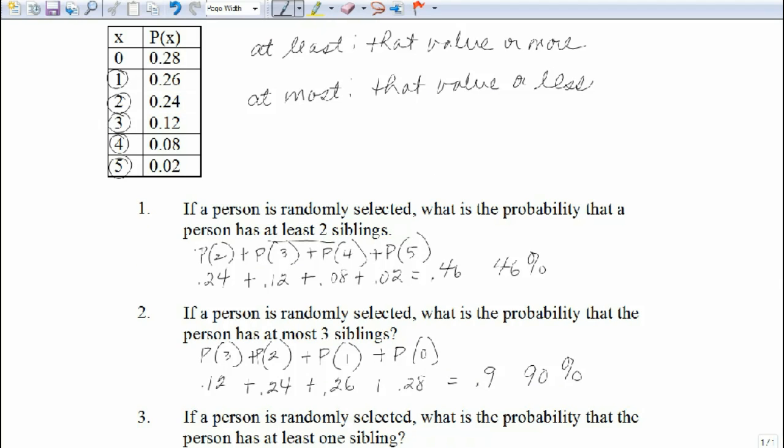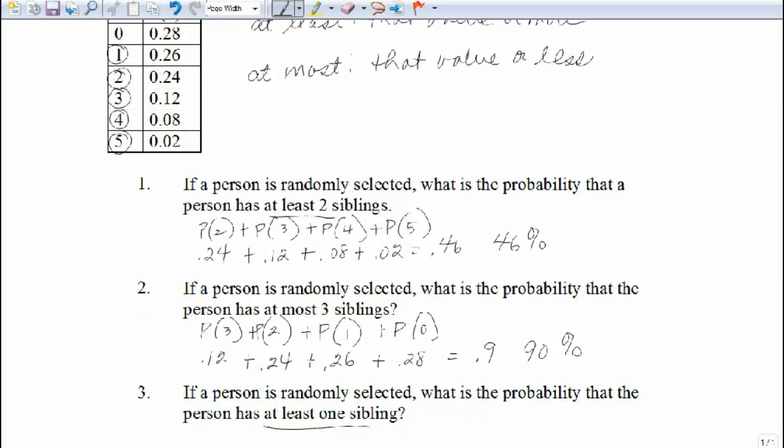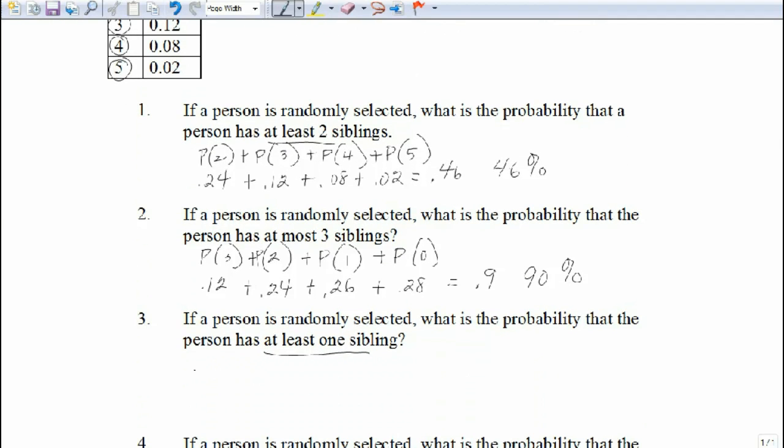So again, we already calculated two, three, four, and five with the first question. We're just going to add our one in to 0.46. So we end up with 72%, or 0.72. So let me take the 0.46 plus the probability of the one. 0.46 plus 0.26.